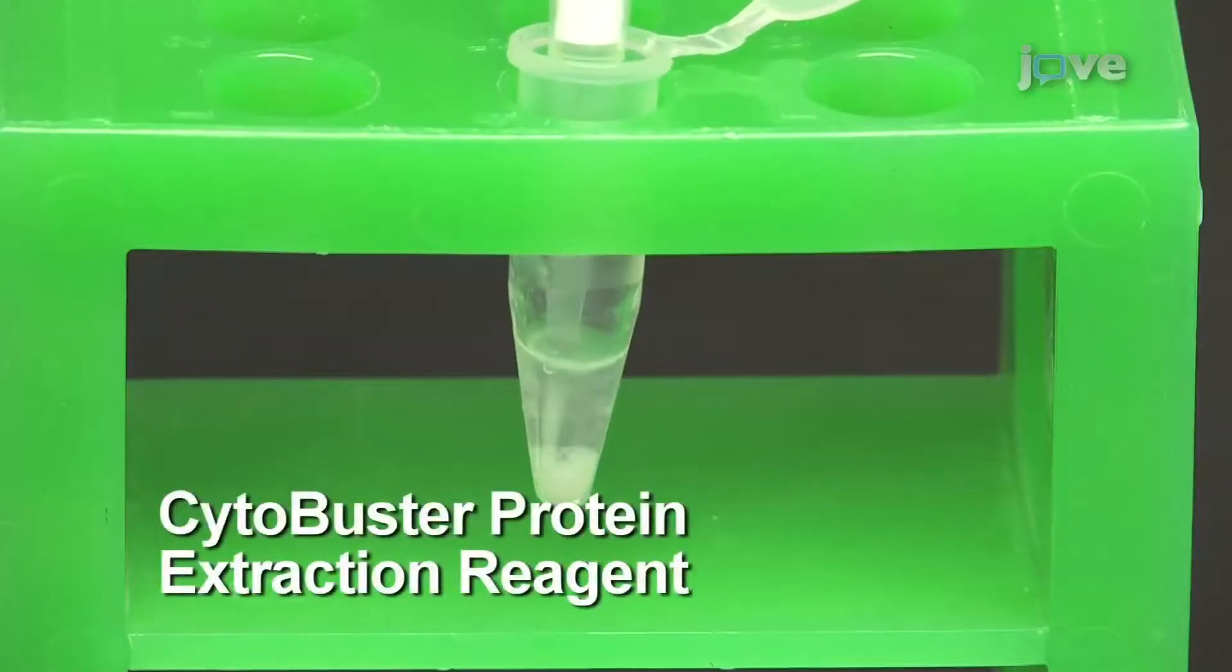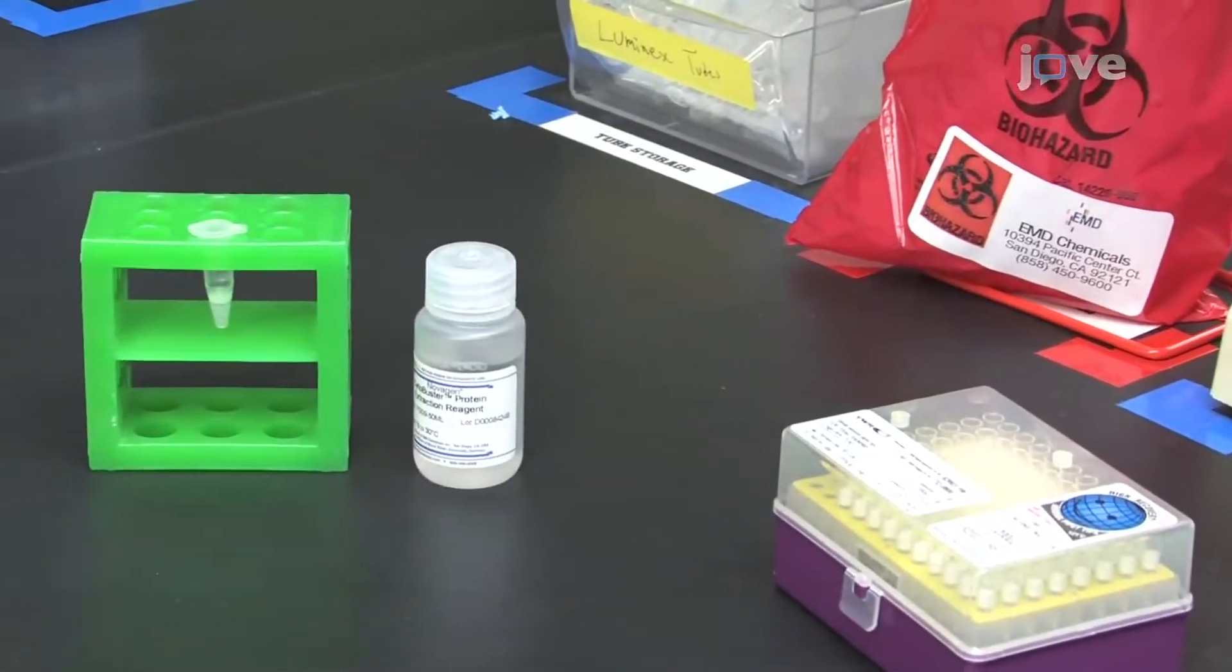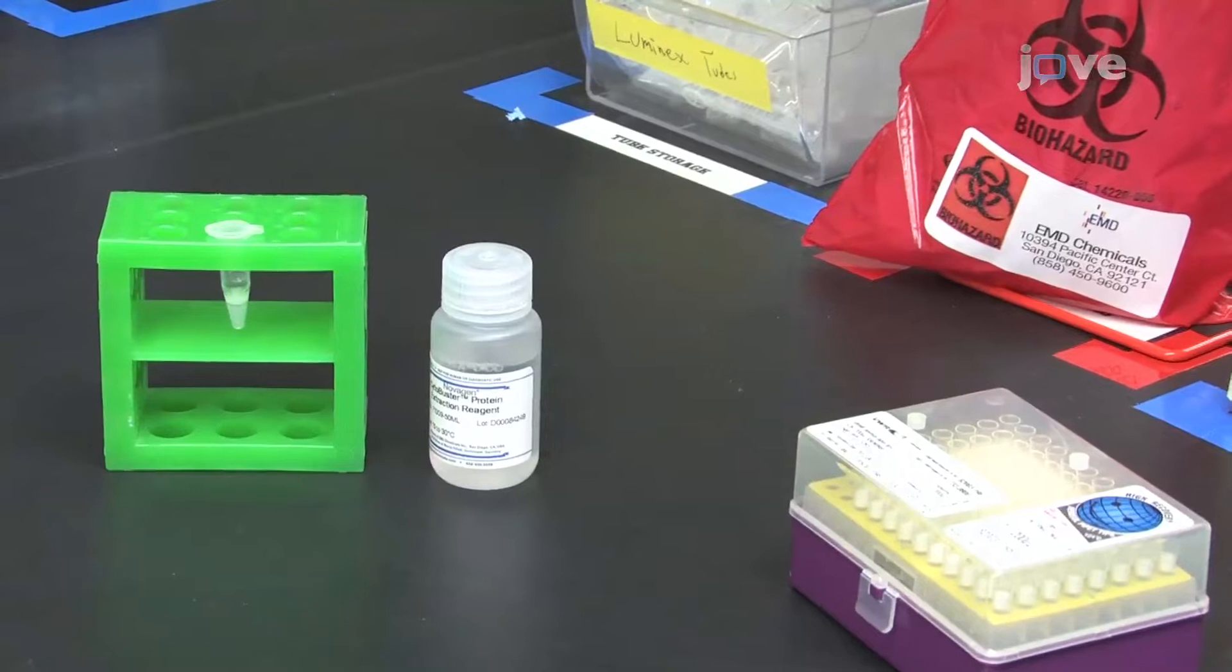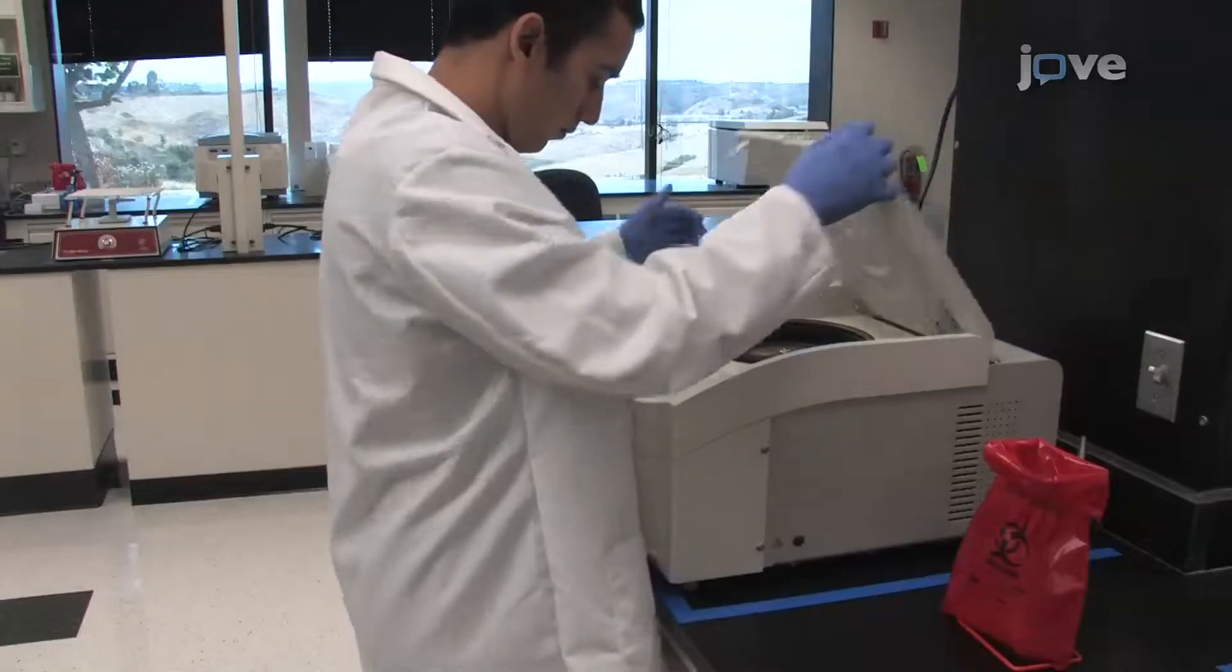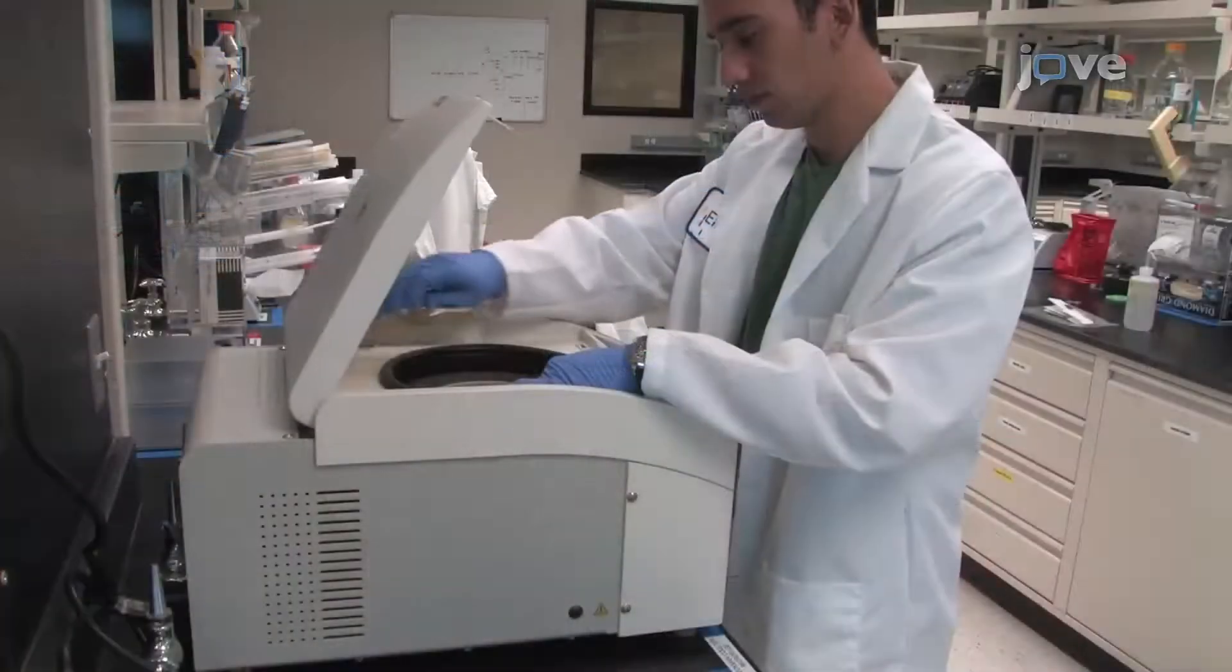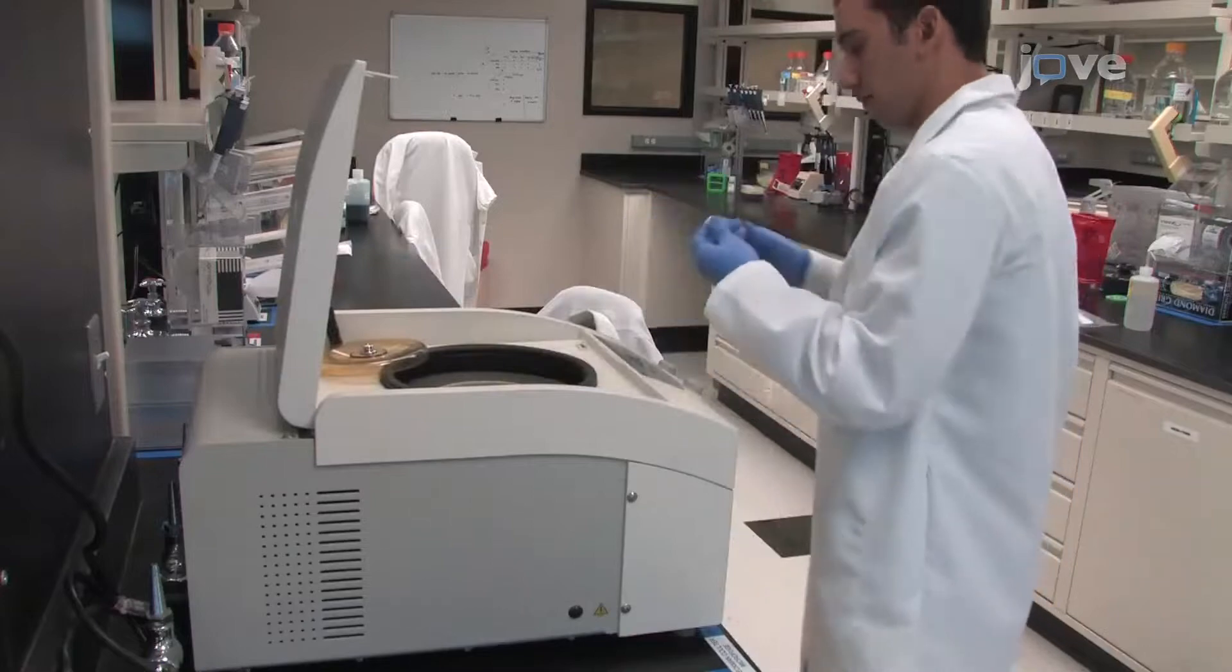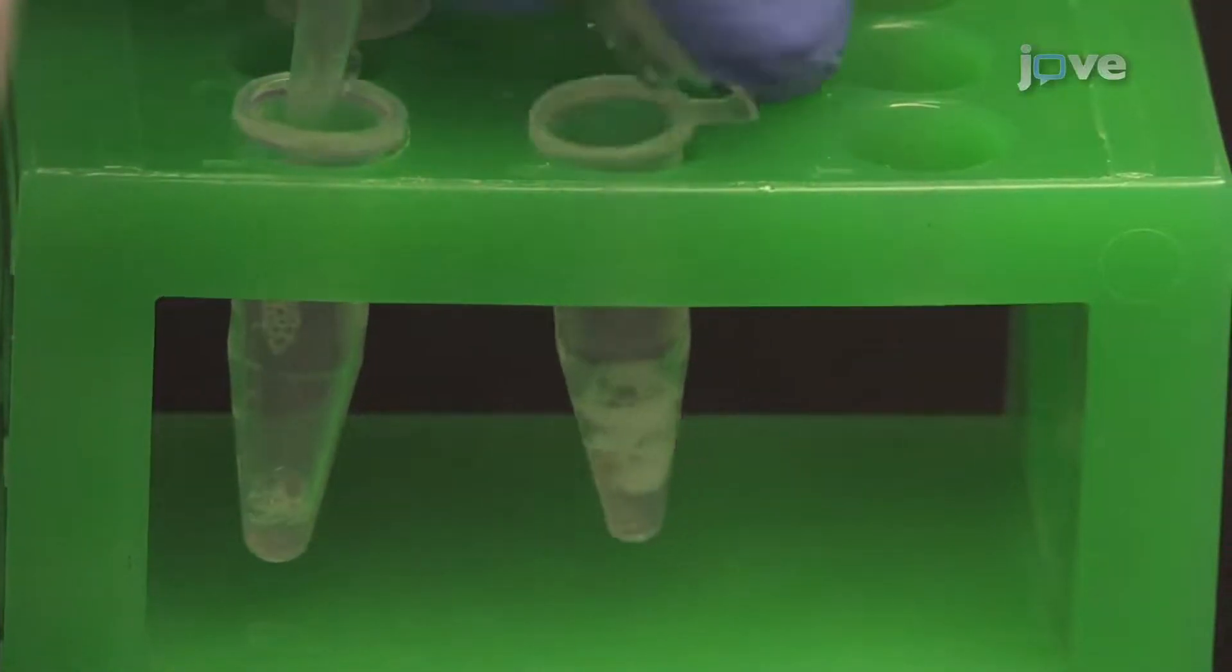Incubate the sample at room temperature for 5 minutes. Next, spin the sample for 5 minutes at 16,000 times gravity at 4 degrees Celsius. Following centrifugation, transfer the cleared supernatant to a fresh tube and proceed with analysis.